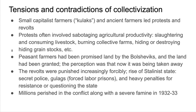There were myths and rumors saying that all property was going to be abolished, or that wives were going to become property of the entire collective — nonsense that no one was planning or talking about, but the rumors spread like wildfire. The peasant farmers had been promised land by the Bolsheviks as part of their struggle to gain political power, and the land had been granted. The perception was now that it was being taken away for collectivization, and the revolts were forcibly punished. This is part of the rise of the Stalin state — the secret police and gulags.